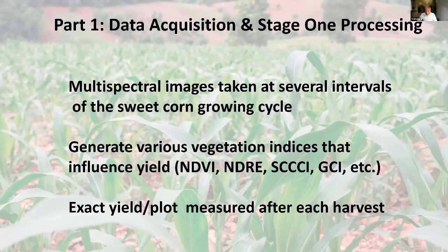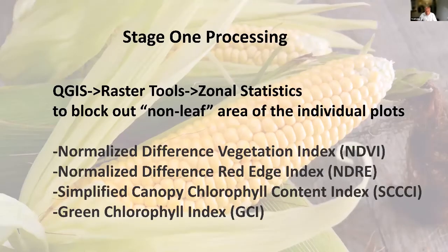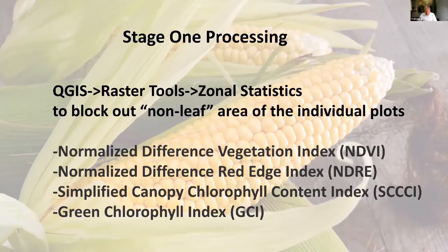To obtain accurate vegetation indices, we need to block out the non-leaf areas of individual plots, including boundary areas and exposed soil within the plantation. We do this using the QGIS feature called raster to zonal statistics, in order to get a more accurate reading of the vegetation indices.